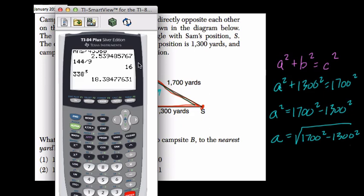This is fairly easy to enter in the graphing calculator. I would put my parentheses in: 1,700 squared, which is the square button, minus 1,300 squared.